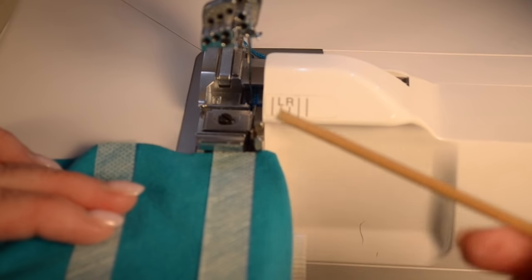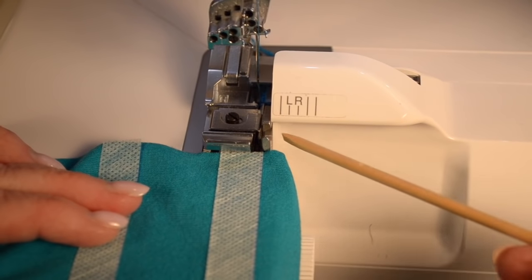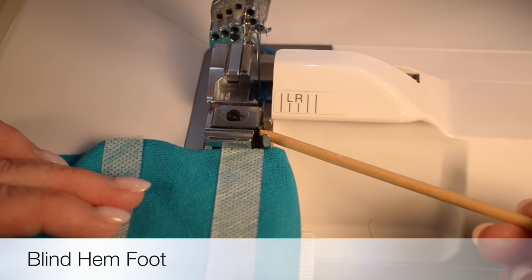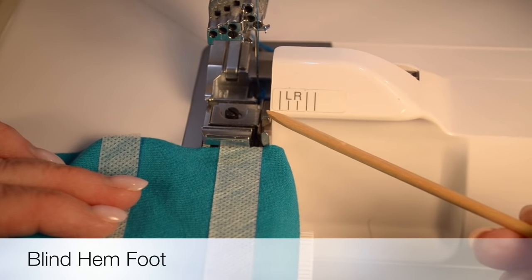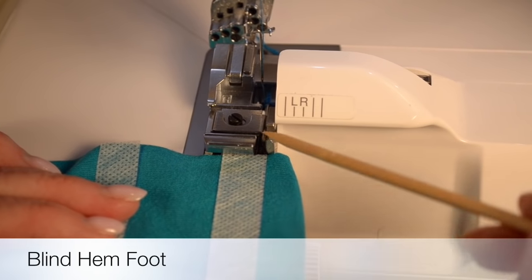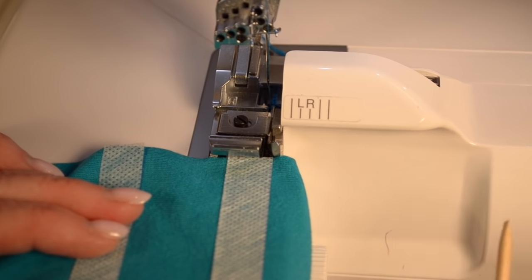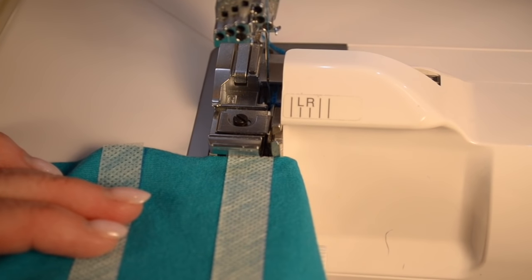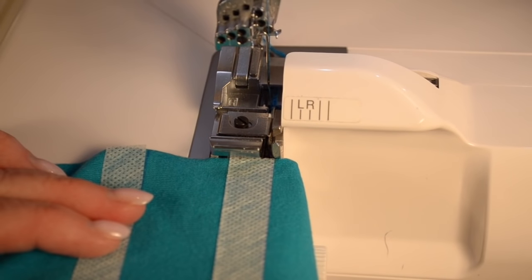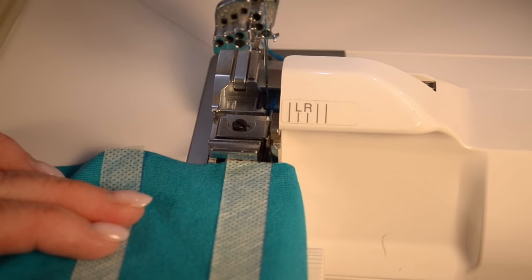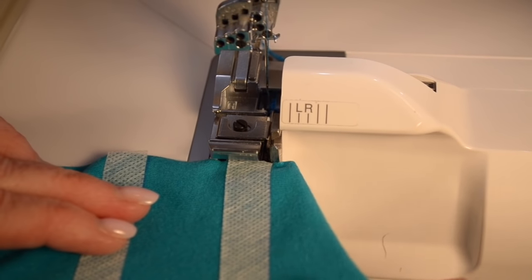I'm set up at the machine. I have my blind hem foot on and here is that little guide or flange I was talking about and here's my cutting blade so you can see how that's going to protect the edge of the fabric from the cutting blade so it won't nick it. And again it's all the way over to the right. I have my strips of the fabric on the wrong side of my fabric.